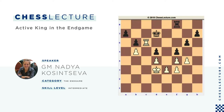Right now the pawn on a7 is weak, but if white brings the rook to the a-file, black can use his own rook to protect it, or the king can go to the b-file to protect the a7 pawn. So far it's unclear what white can do to break through in this rook endgame.